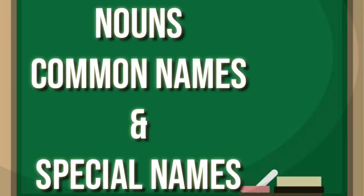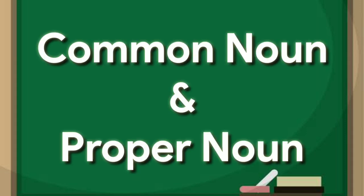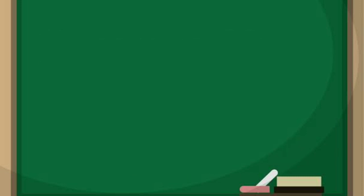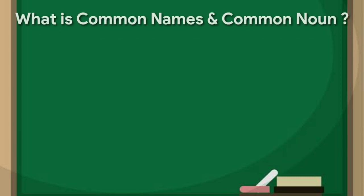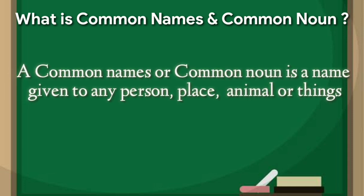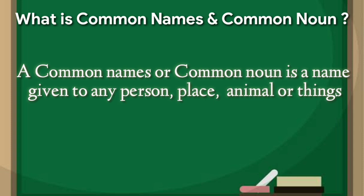There are two types of nouns, children. First is common noun and second is proper noun. You can also say common names and special names. A common name or common noun is a name given to any person, place, animal or thing.